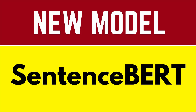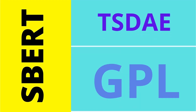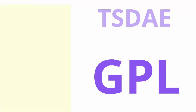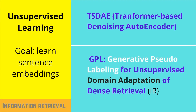Hello internet, today we're going to talk about a new model for sentence transformers. Last time I showed you about Sentence-BERT, a sentence embedding, and we had a look at the transformer-based denoising autoencoder. Today we're going to focus on the latest and bleeding edge of research in sentence embedding.